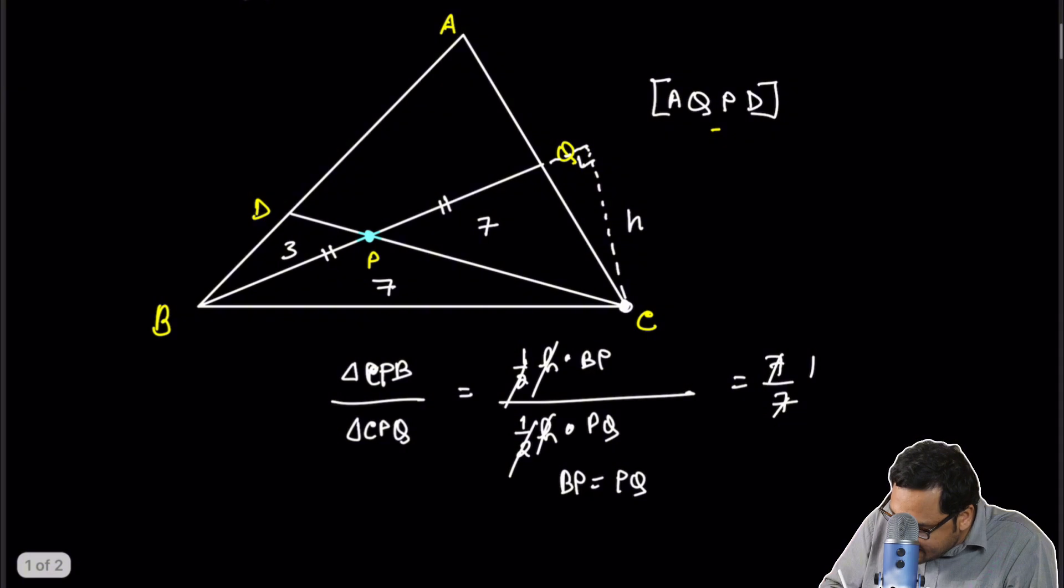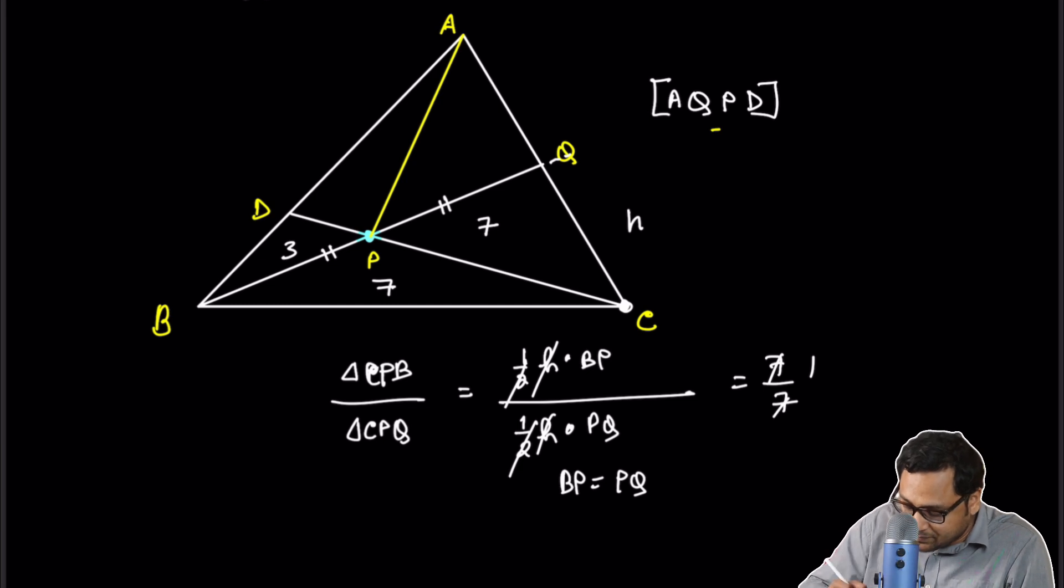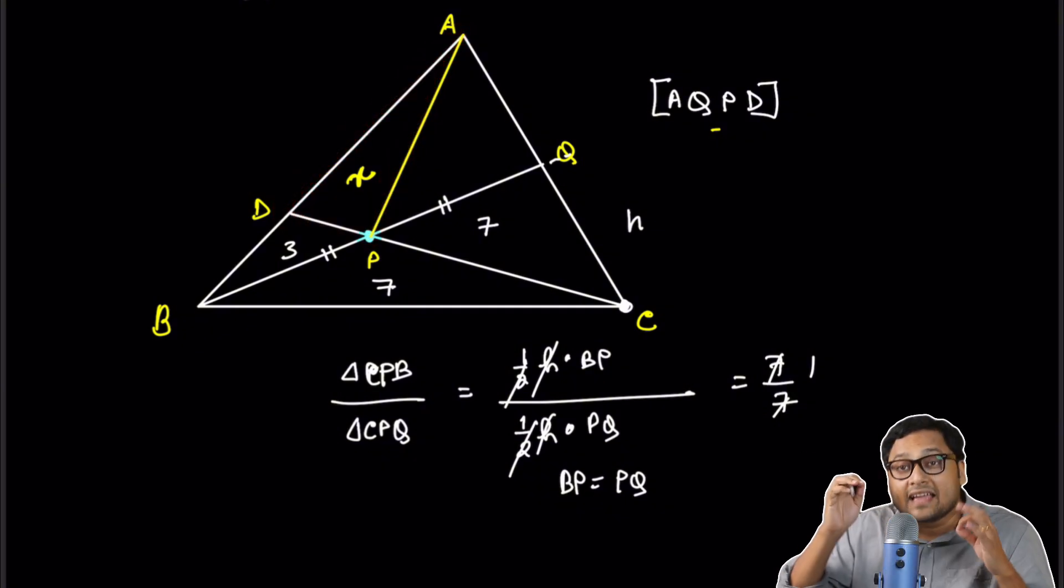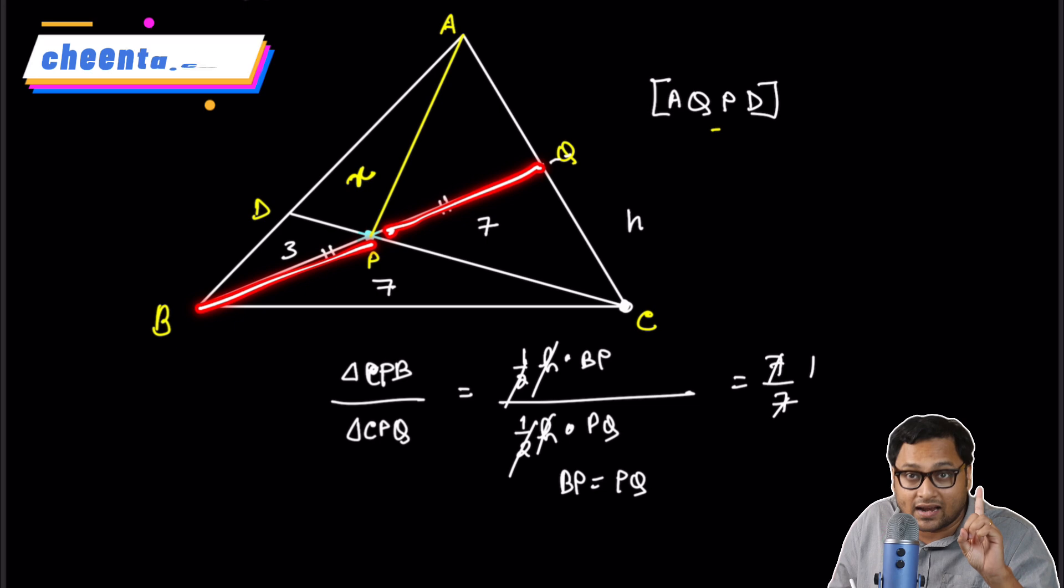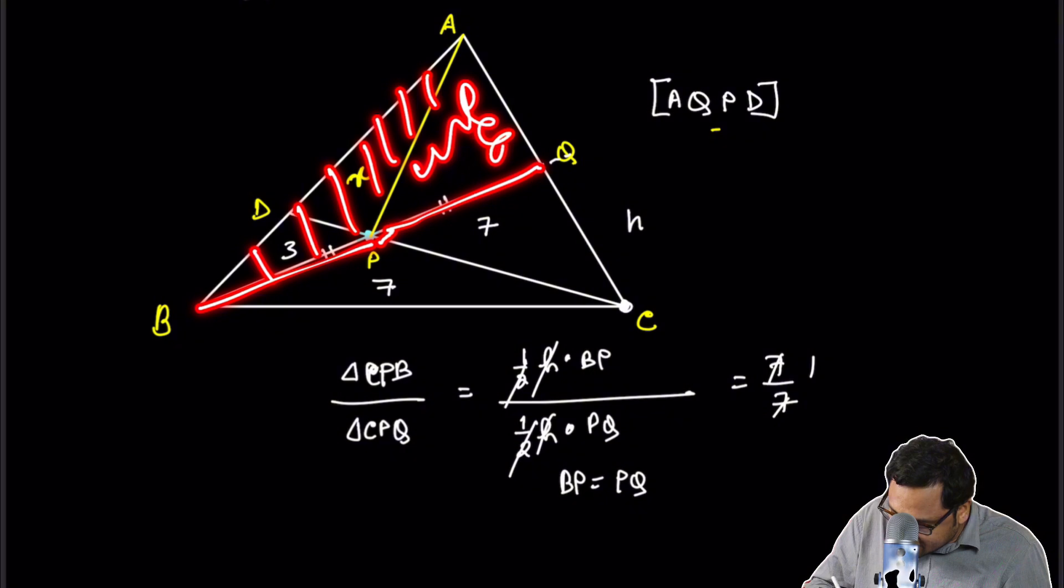Now what I'm going to do is I will join AP as a construction. So let me just erase this part. AP as a construction. So now suppose this part is X. That is triangle APD is X. Again, we use the fact that BP over QP is 1.